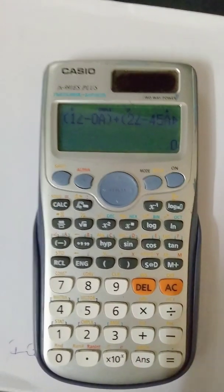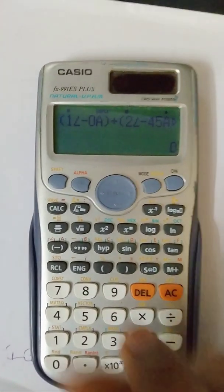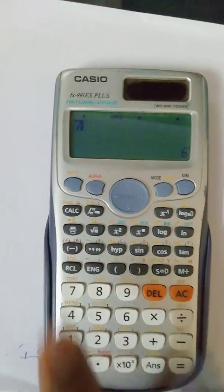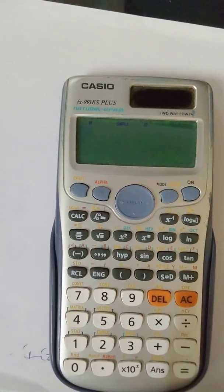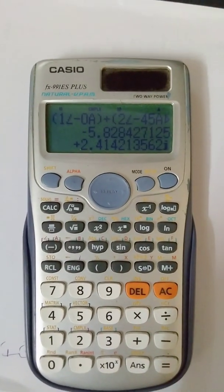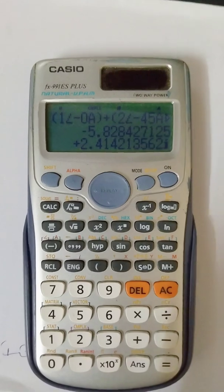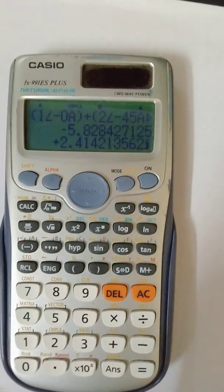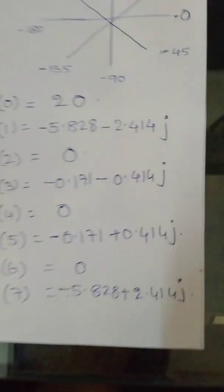And similarly, for finding the final value, that is X of 7, you can press once again on CALC and press 7, which will be equal to minus 5.828 plus 2.414j. That is what I have noted here. The values can be verified in this way.